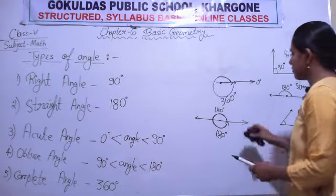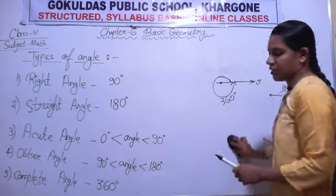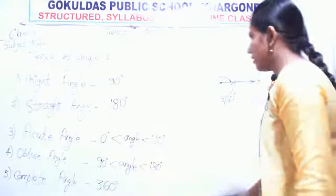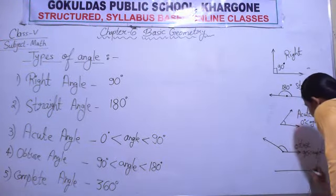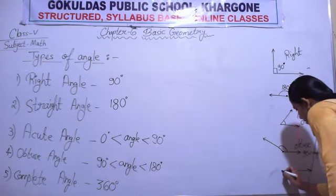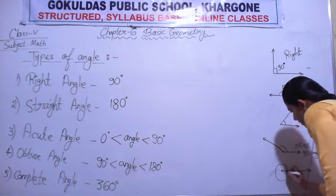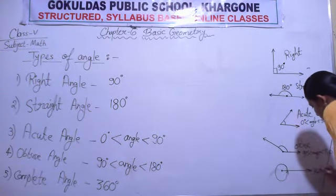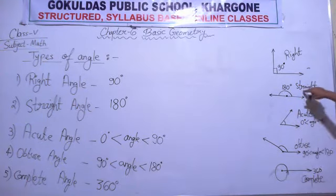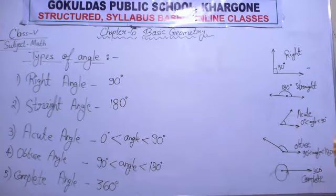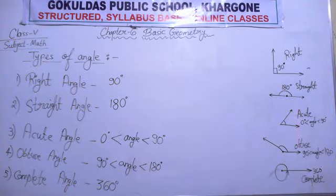We have discussed five types of angles: right angle at 90 degrees, straight angle at 180 degrees, complete angle at 360 degrees, acute angle between 0 and 90 degrees, and obtuse angle between 90 and 180 degrees.